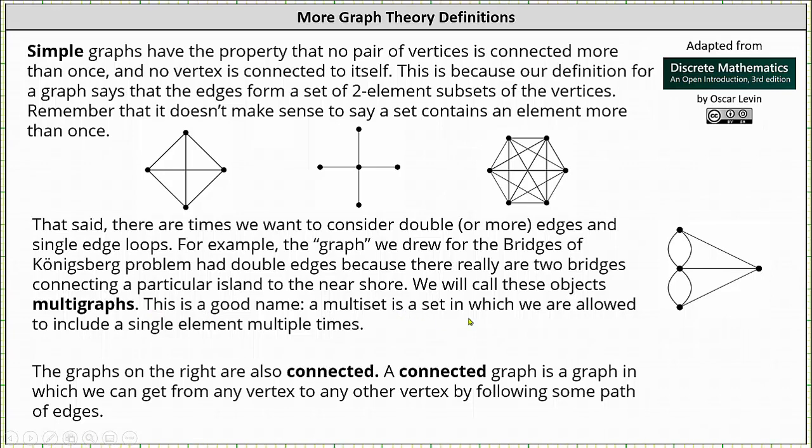This is a good name because a multi-set is a set in which we are allowed to include a single element multiple times. So again, the graph used for the Bridges of Königsberg problem is a multi-graph.